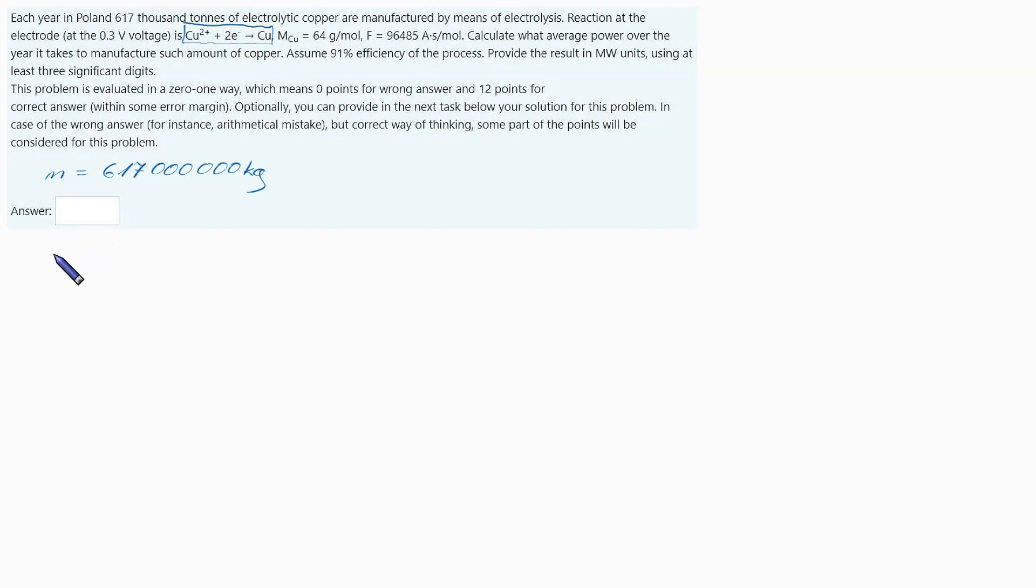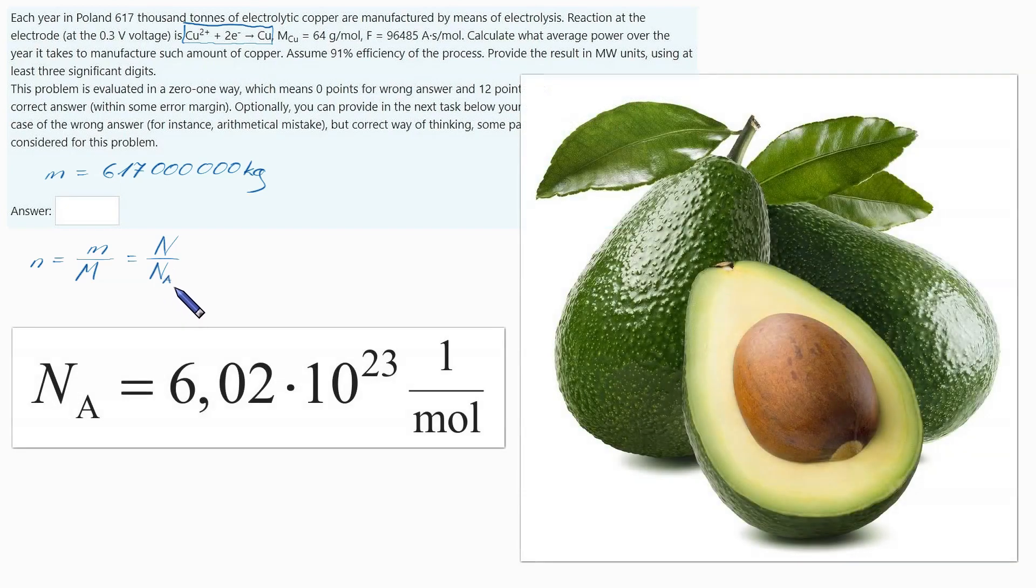The amount of moles, by definition, is mass of a sample divided by mass of one mole, or the amount of atoms in a sample over amount of atoms in one mole, N_A. This is a physical constant - Avogadro number.